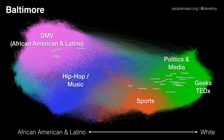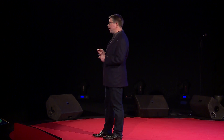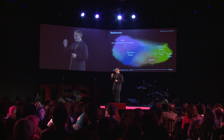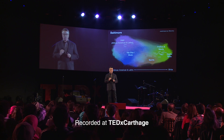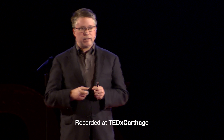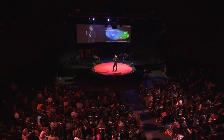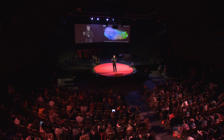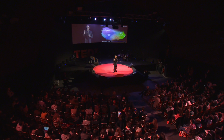This is a map of my hometown of Baltimore, Maryland, and I want to stress that it's not a geographic map of any kind. It's a map showing the communities of people in the city. Each dot represents a person or a Twitter account, each line represents a follow relationship between them, and the people at the opposite ends of the map have the least in common. Each color represents a community.